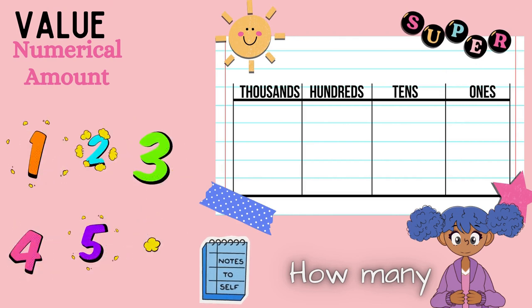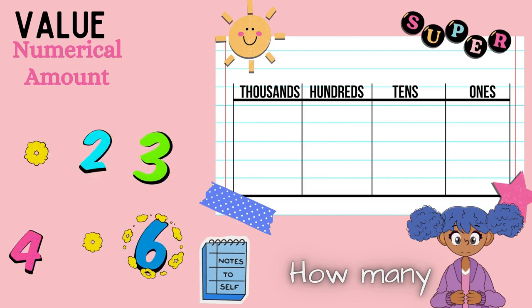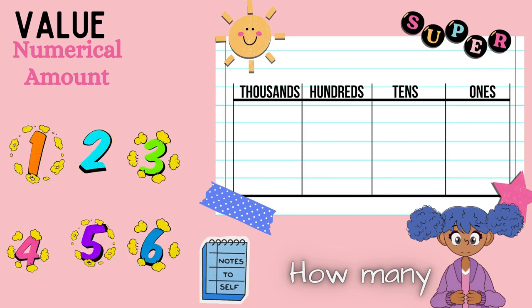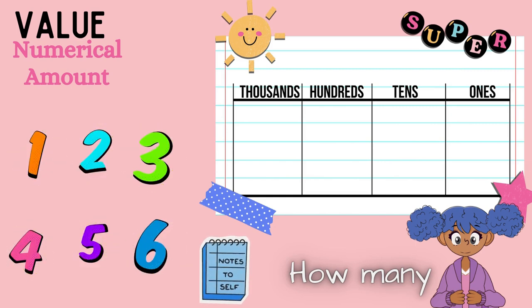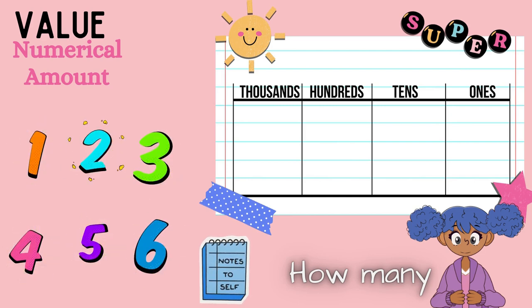So when we're talking about value, we're talking about numeric amount. And that can be 1, 2, 3, 4, 5, 6, 7, 8, 9, 10, all the way to infinity. The value is just a fancy way of us to say how many ones, how many tens, how many hundreds, how many thousands, and so on.